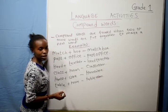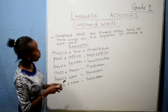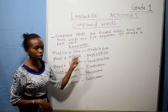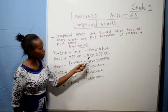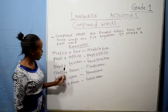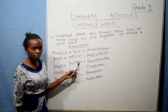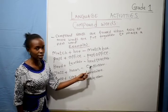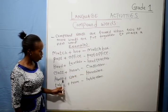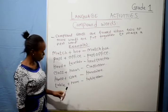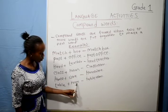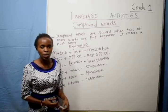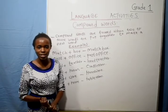Are we together? Yeah. These are compound words. We have match plus box to give us matchbox. We have post plus office to give us post office. We have head plus teacher to give us headteacher. Class plus room to give us classroom. We have home plus work to give us homework. We have table plus room to give us tableroom. These are compound ones. I hope you are better soon. Have a great day.